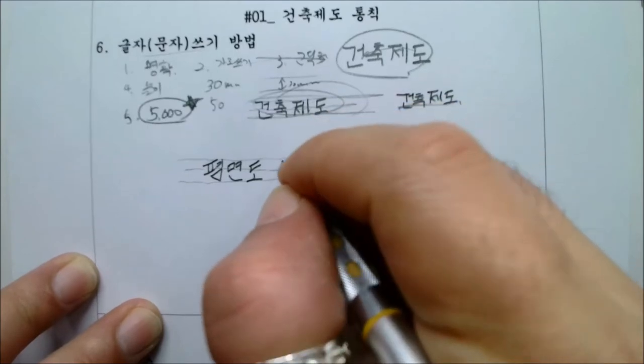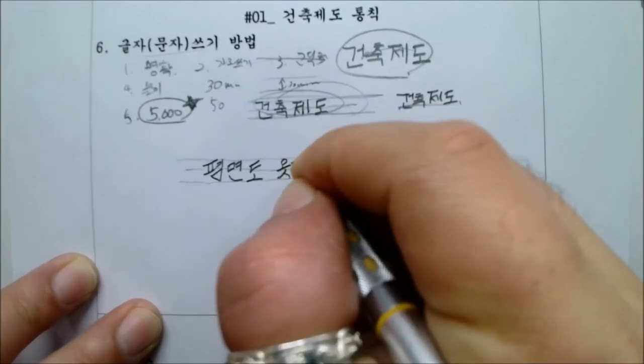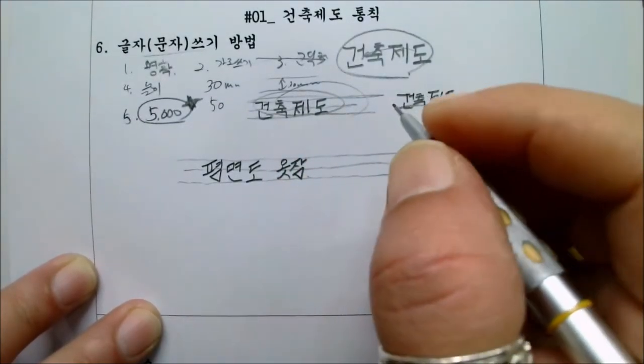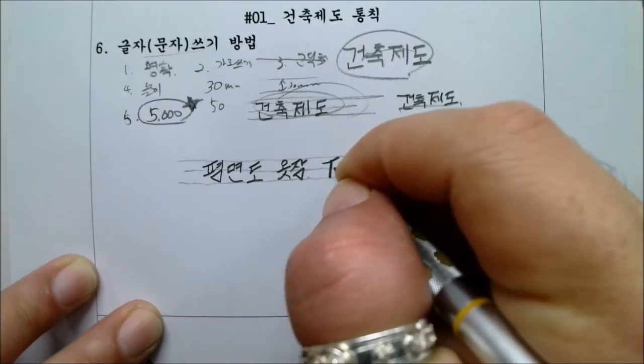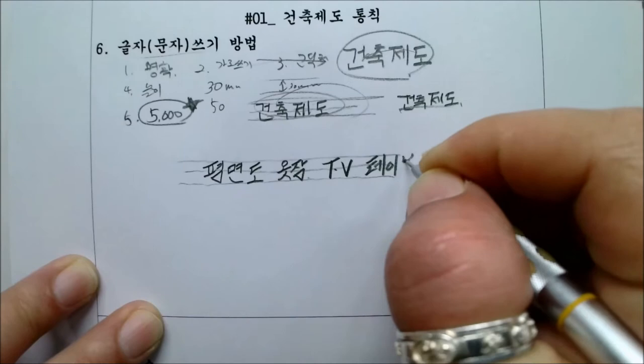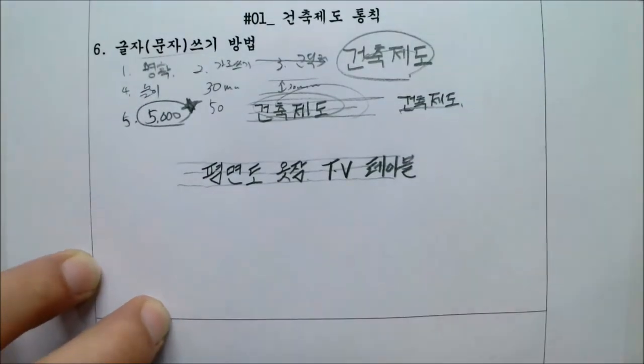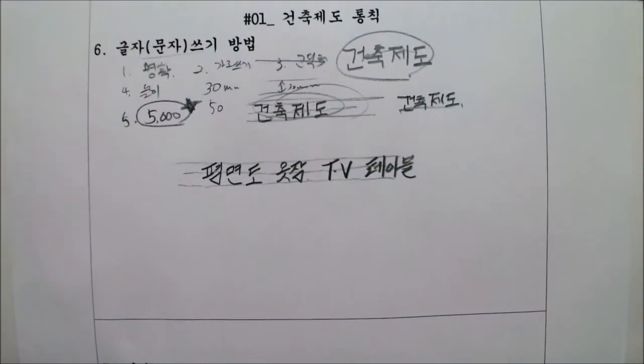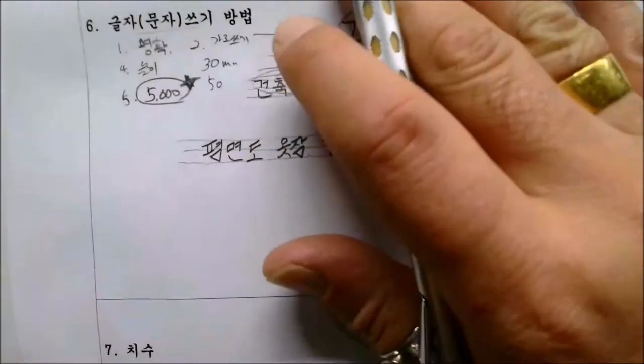그 다음에, 뭐, 우리가 옷장, 그 TV, 테이블. 선생님, 이게 고딕치예요? 고딕체를 기본으로 하지만 실질적으로 여러분들 또박또박 잘 적으시면 됩니다. 아시겠나요? 여기까지 우리가 글자 쓰기 방법을 했고요.